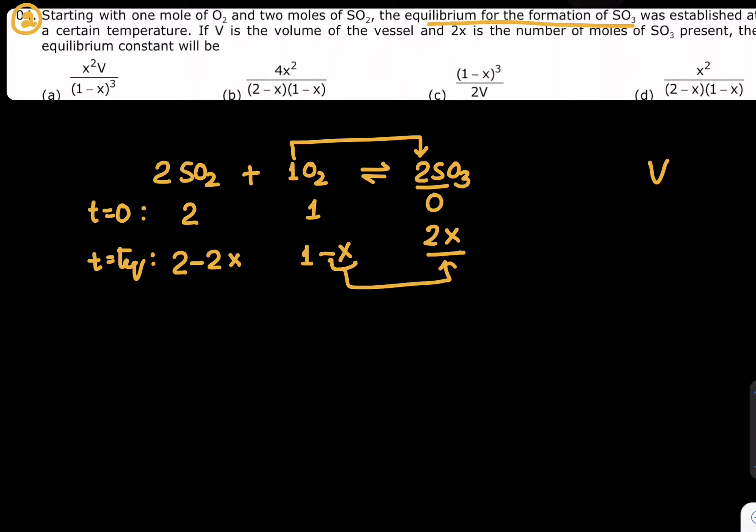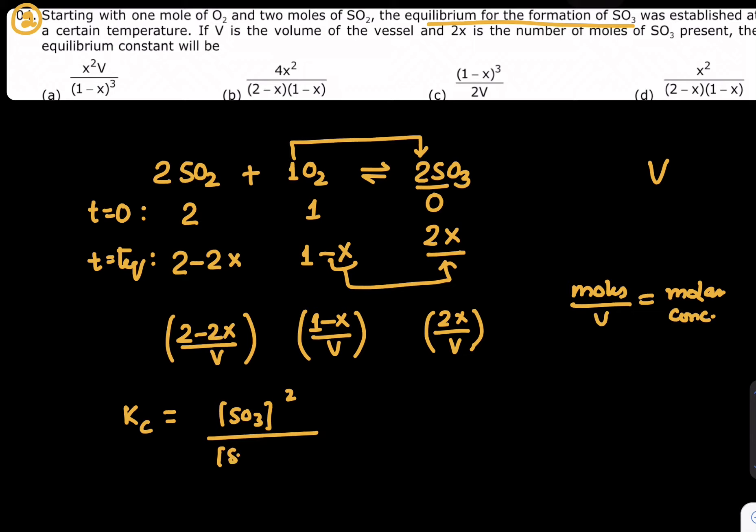The volume of vessel is given as V and we know moles divided by volume is called molar concentration. (2 - 2x)/V is the molar concentration of SO₂, (1 - x)/V is the molar concentration of O₂, and 2x/V is the molar concentration of SO₃. The question is find Kc. We know Kc = [SO₃]² / ([SO₂]² [O₂]).